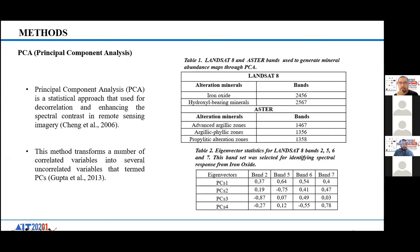Principal component analysis is a statistical approach used for decorrelation and enhancement of spectral contrast in remote sensing. To select the bands for PCA, only certain bands containing hydroxyl absorption and reflectance features are used — specifically bands 2, 4, 5, and 6 of Landsat 8. These methods transform correlated variables into uncorrelated variables that define the principal components.